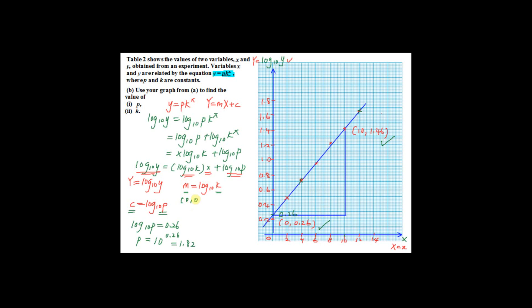So I have 2 points, 0, 0.26 and 10, 1.46. So the gradient equals y2, 1.46 minus y1, 0.26, divided by x2, 10 minus x1, 0. This equals 0.12.